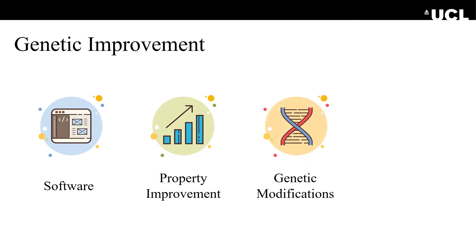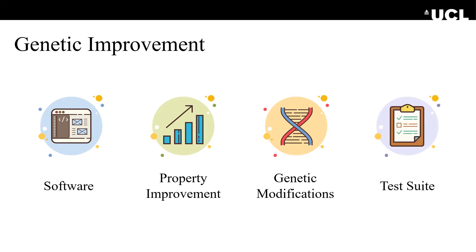For doing that, we represent the software in a genetic representation and apply modifications to it. For example, we can represent it as a tree or list of statements, lines, or blocks of code, and then apply mutations and crossover such as deleting statements, swapping lines, copying blocks of code, and so on. The idea is that those modifications will maintain the desired behavior of the software while improving the target property. To check if that occurs, we use the test suite as an oracle. The test suite should faithfully capture the desired behavior and guide the generation of valid patches.